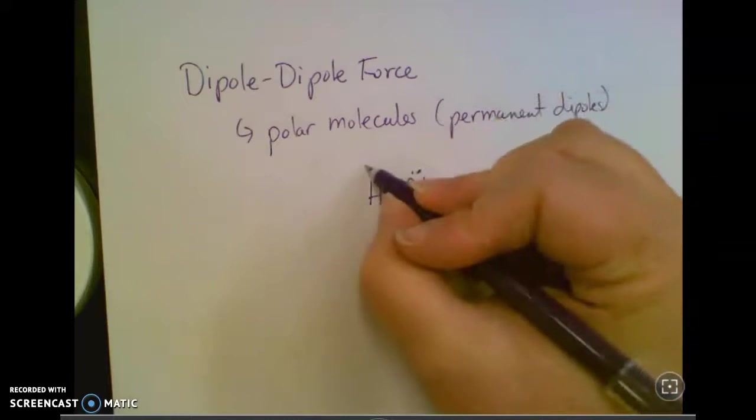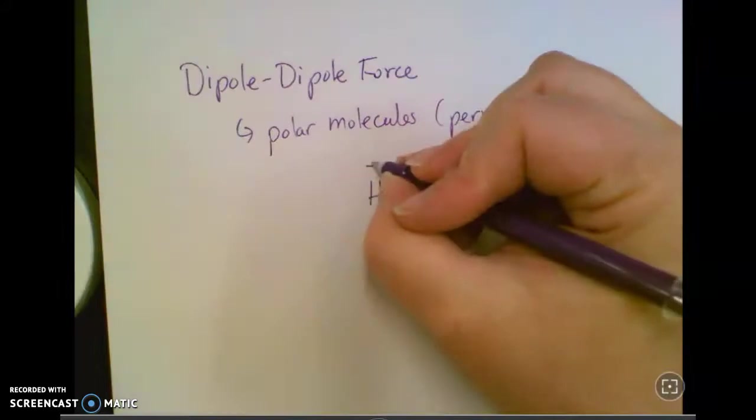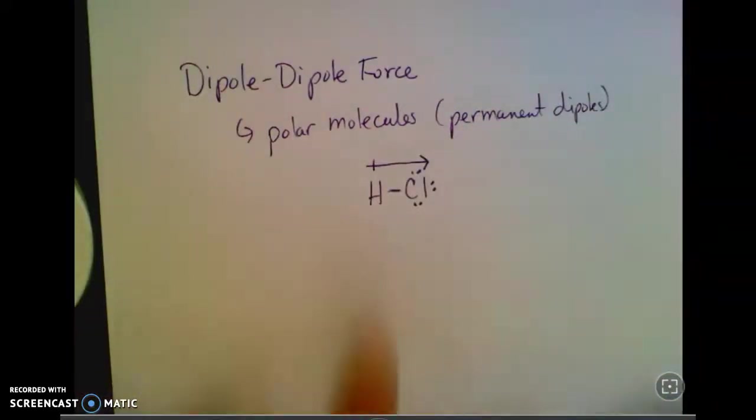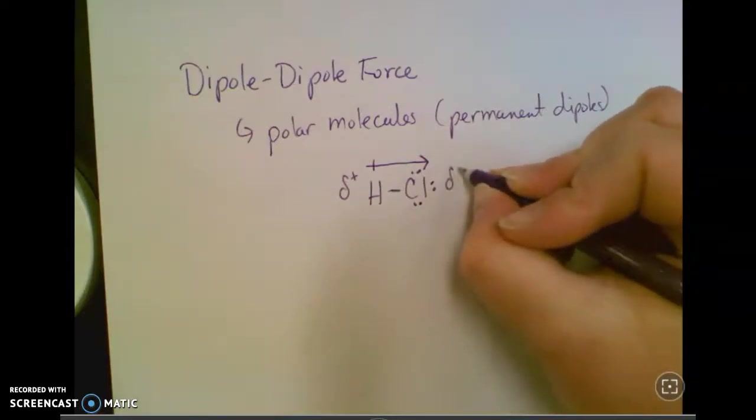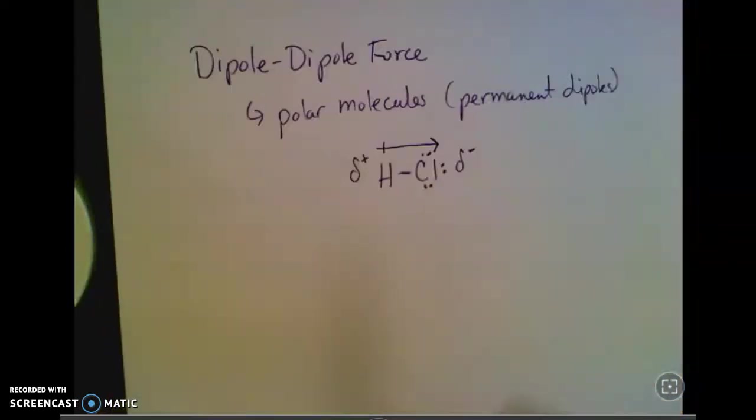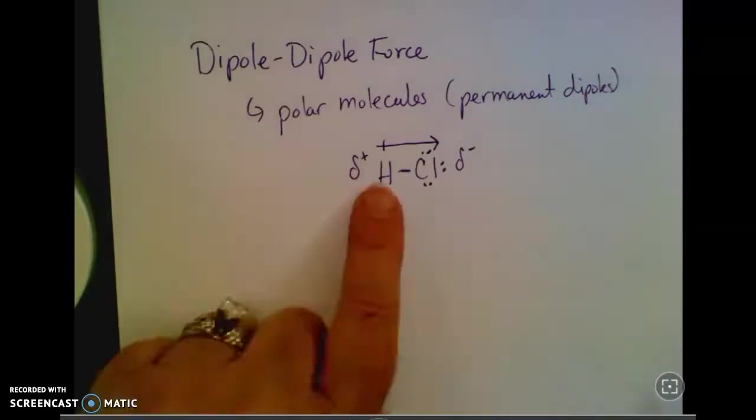Chlorine pulls electrons toward itself because it's more electronegative. So it's slightly positive on this side and slightly negative on this side. It's always that way. It's not something that comes and goes like with London dispersion forces.